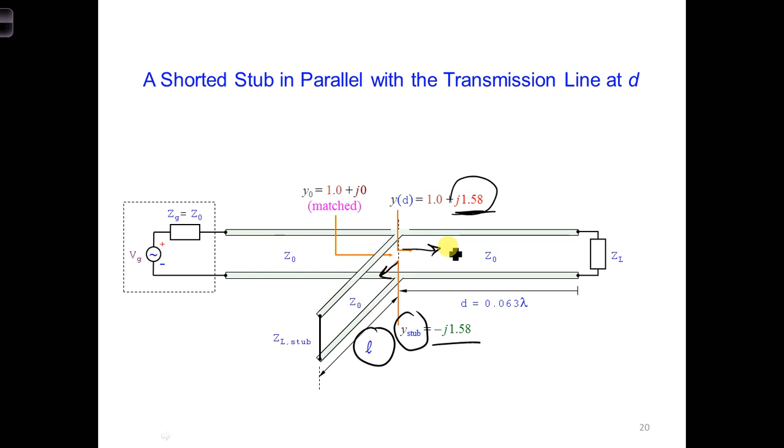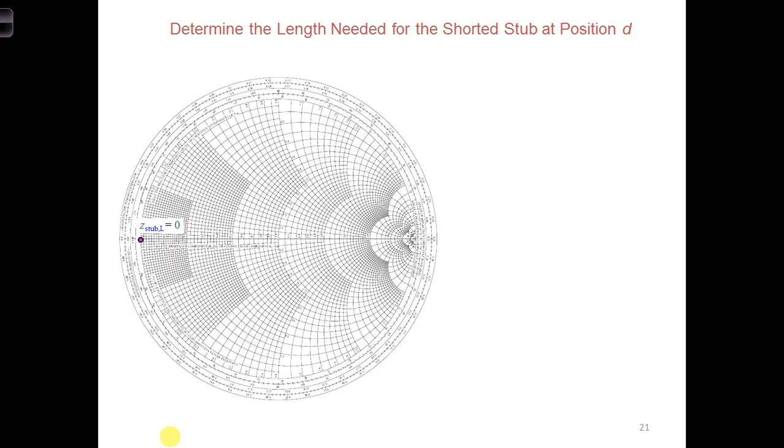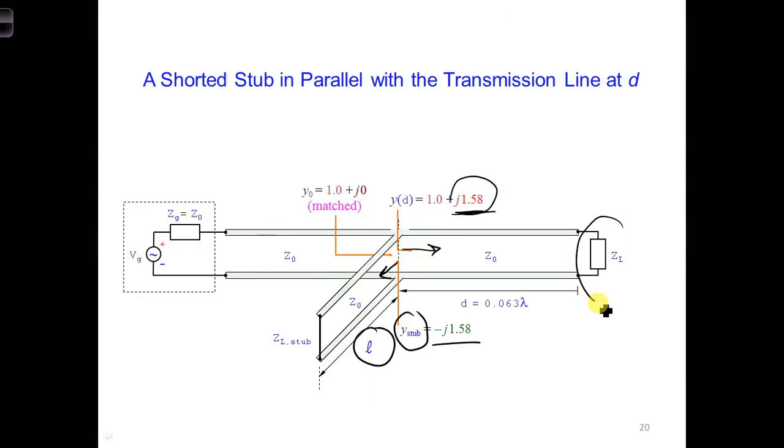To determine what length of transmission line would work, we can use a new Smith chart. In this case, let's start by plotting the load impedance of the shorted stub. Before we plotted the load and worked our way back this direction. Now we're going to start with a fresh Smith chart, plot this new load, the load of the stub, and transform this direction.